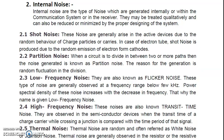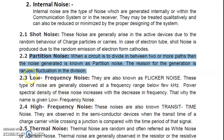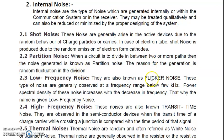Internal noise. As in the last lecture we have seen external noise in communication systems and its sources. Next is low frequency noise, also known as flicker noise. Flicker noise is generally observed at a frequency range below a few kilohertz. The power spectral density of this noise increases with a decrease in frequency — meaning at very low frequencies, the flicker noise will be of greater amount.